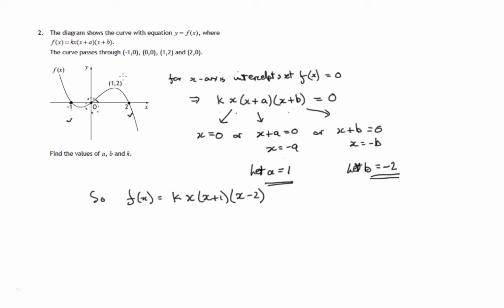And the only other piece of information we know is that it passes through the point (1, 2). So we'll say that since (1, 2) lies on the curve, then we know a further fact that when x equals 1, y equals 2.